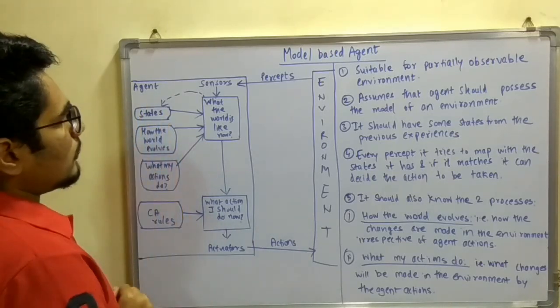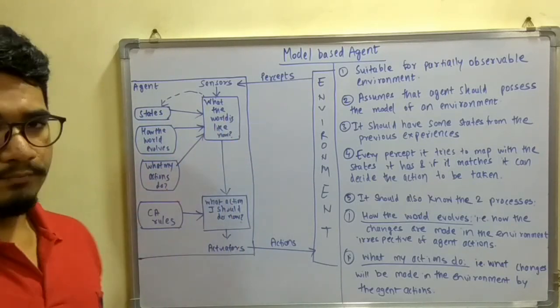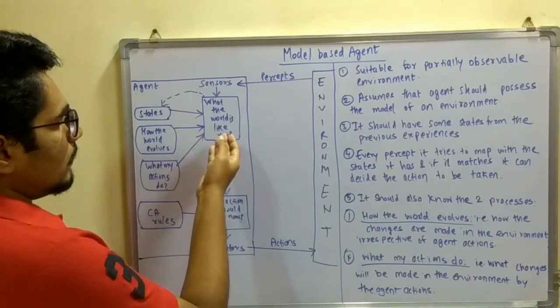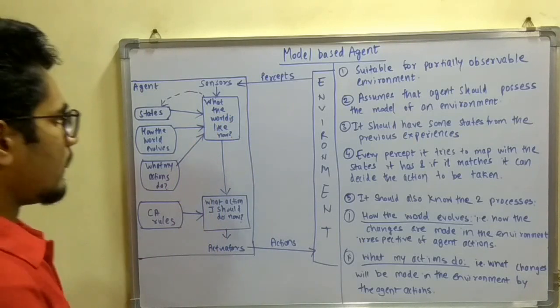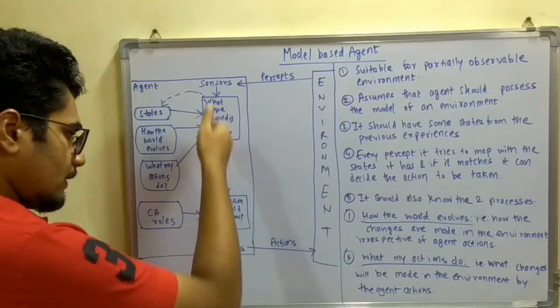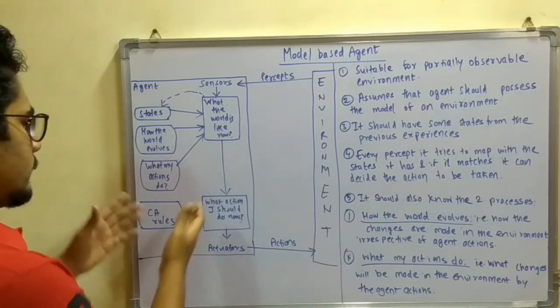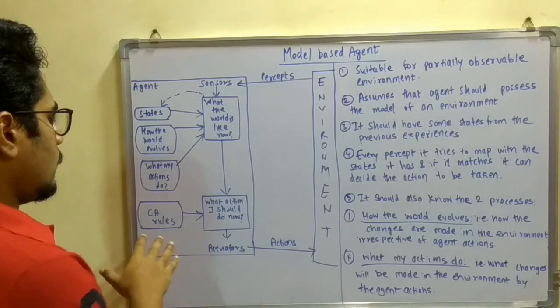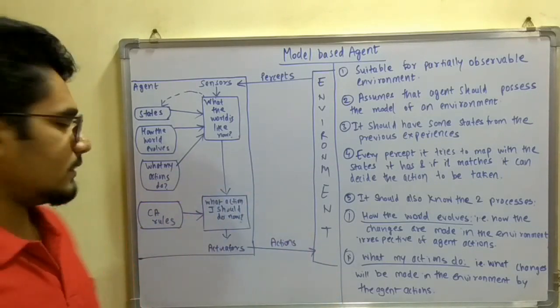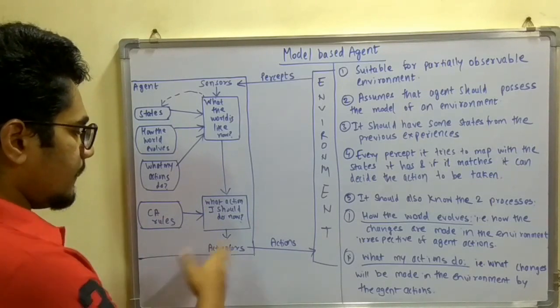Then it has this block where initially at any stage, the agent would not have any information regarding its environment, so it will interrogate what the world is like now. It would get an answer and then produce what action I should do now. Based upon the condition-action rules, if-then, like we saw in the simple reflex agent, it will make its actuators move and act upon its environment.